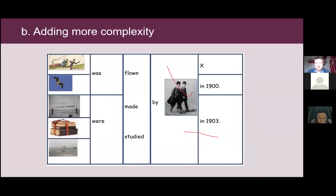In terms of adding complexity for more advanced learners, the grammar structure in the original example was quite basic — past simple. Here we've changed the structure to make it more formal or academic by using the passive. We've introduced 'was' and 'were' as components of the passive voice — for example, 'was made,' 'was flown.' Another technique is to add gaps: take away the verbs and have students produce them themselves. The missing verbs here are the past participle in the passive form — for example, 'built' or 'was built.'